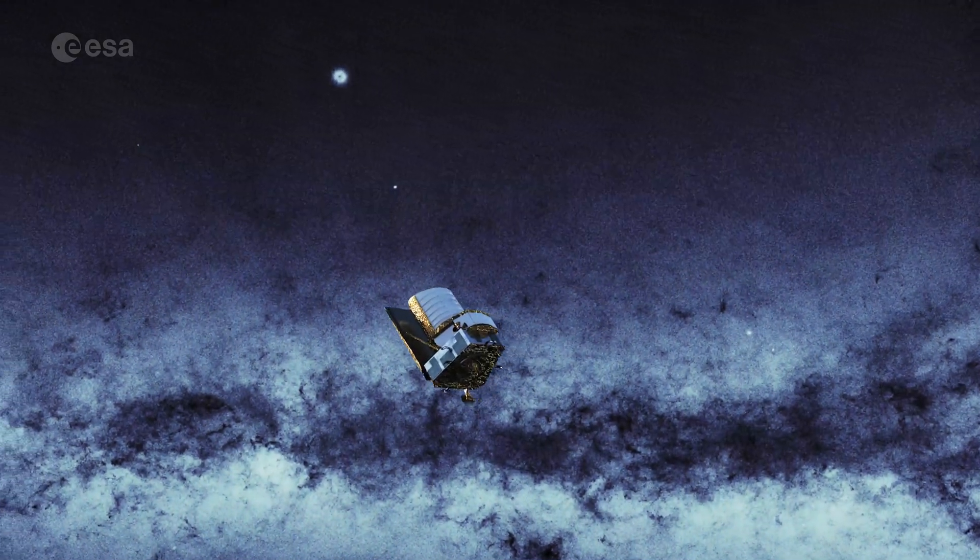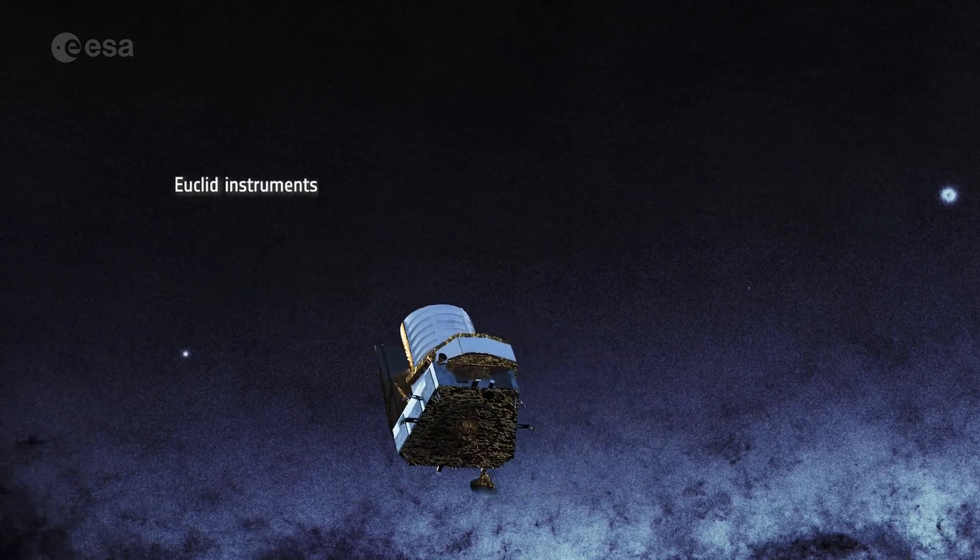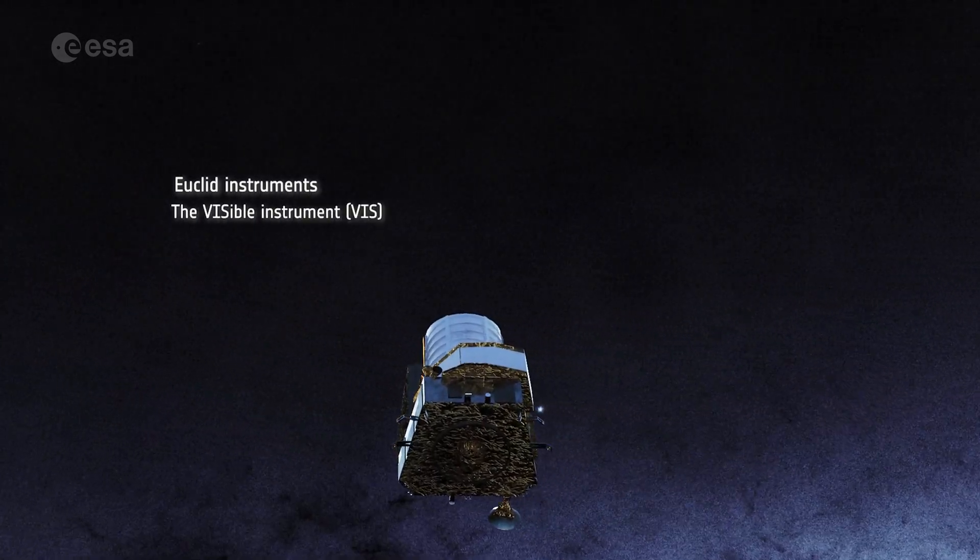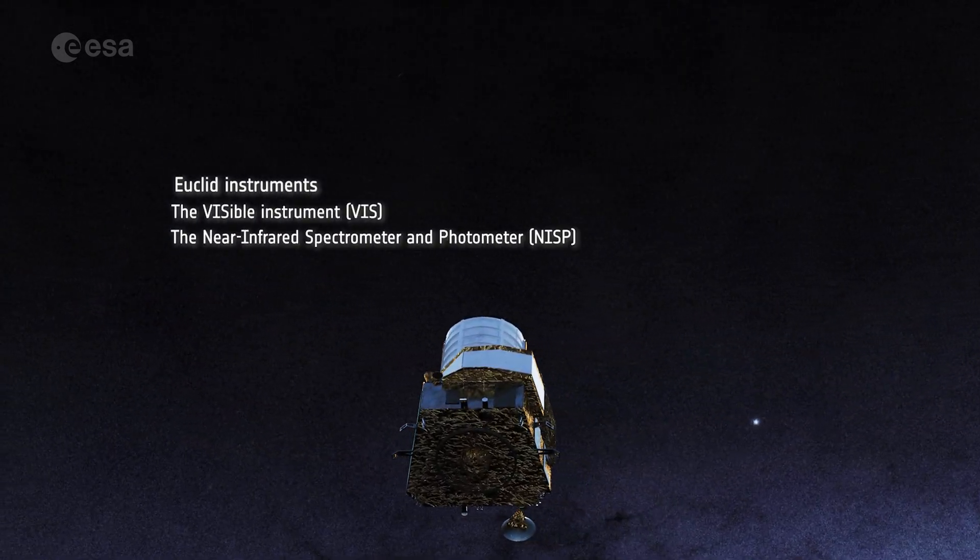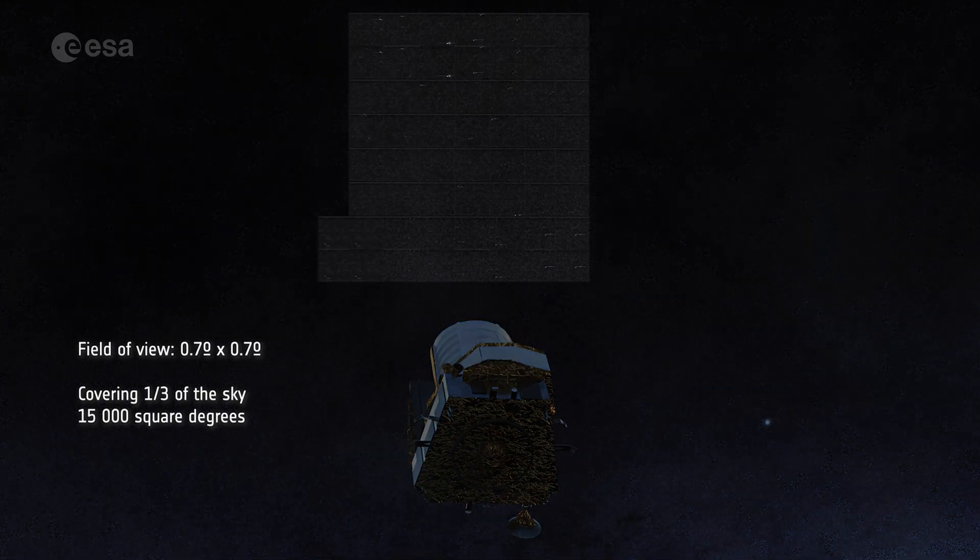Euclid will impose highly stringent constraints on the cosmological model that governs our universe. Euclid will generate images in the visible and infrared covering one-third of the sky.